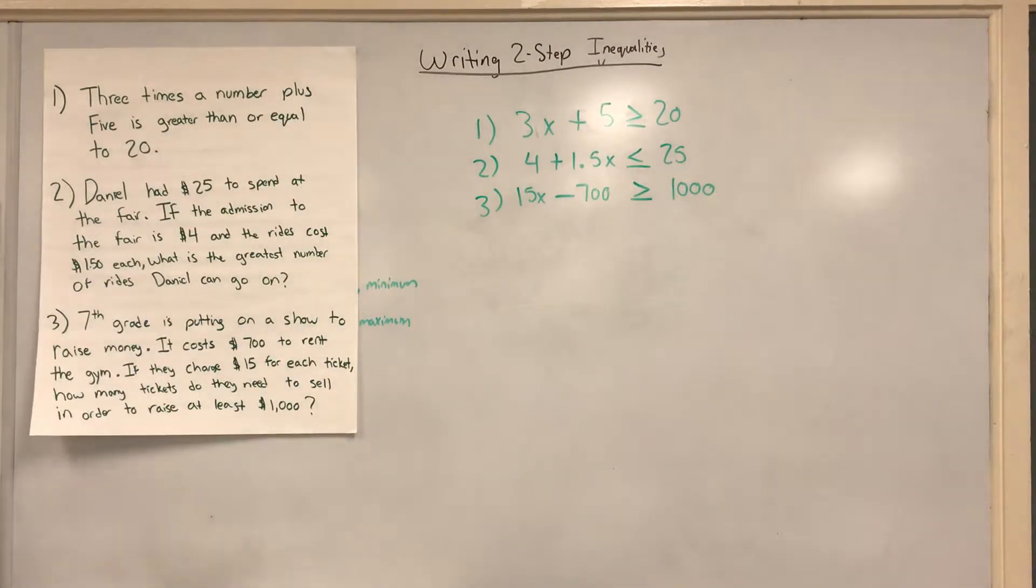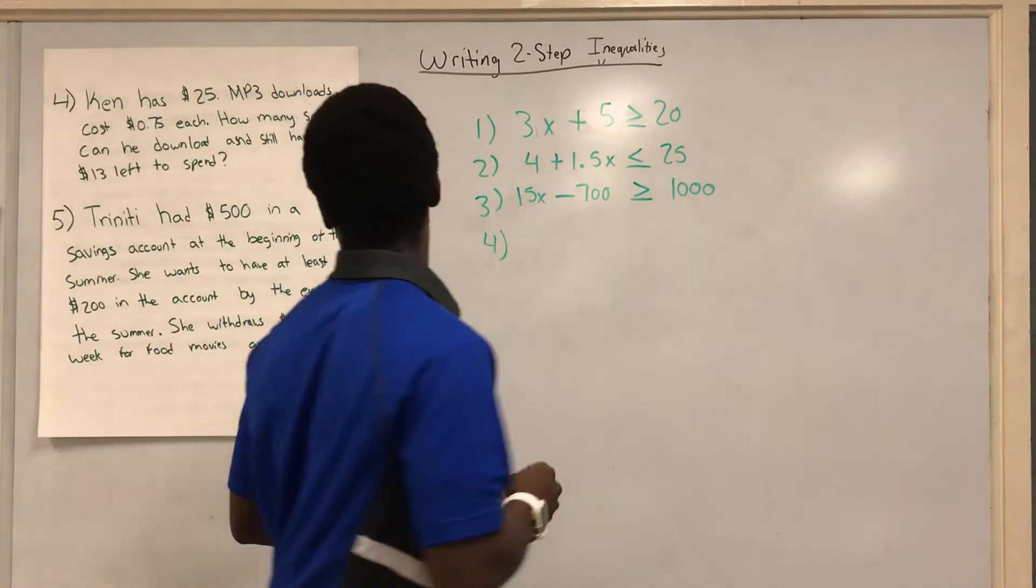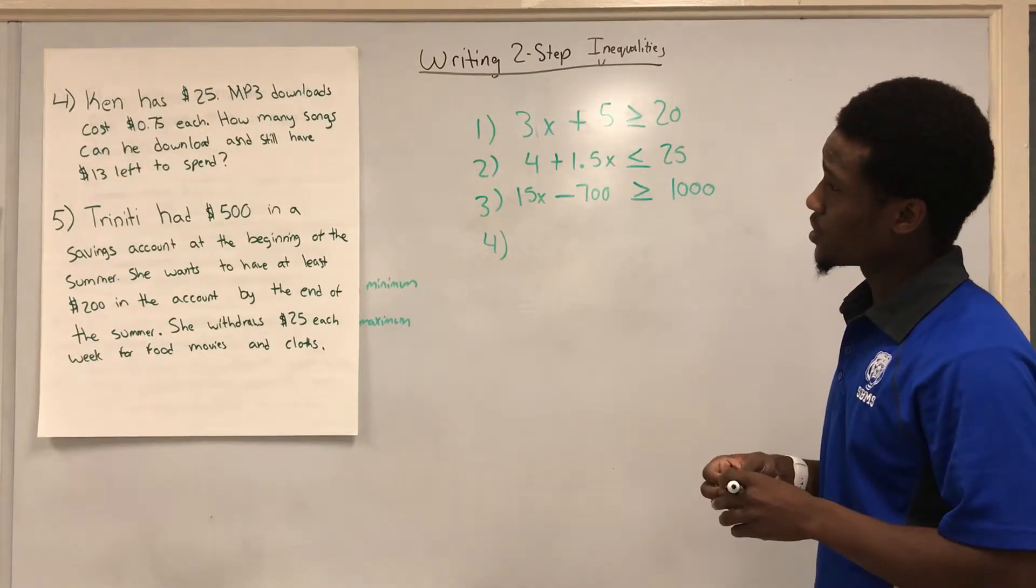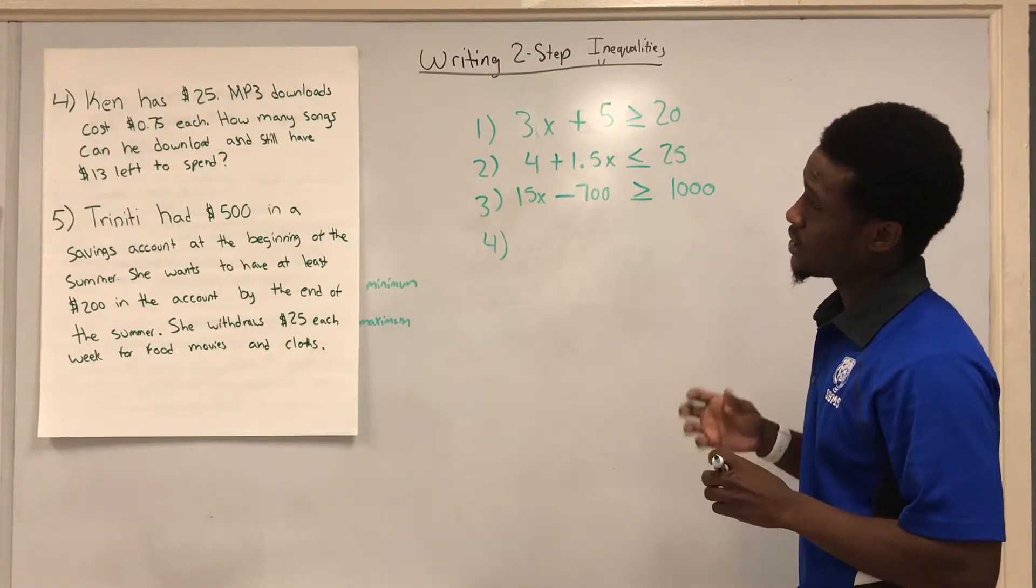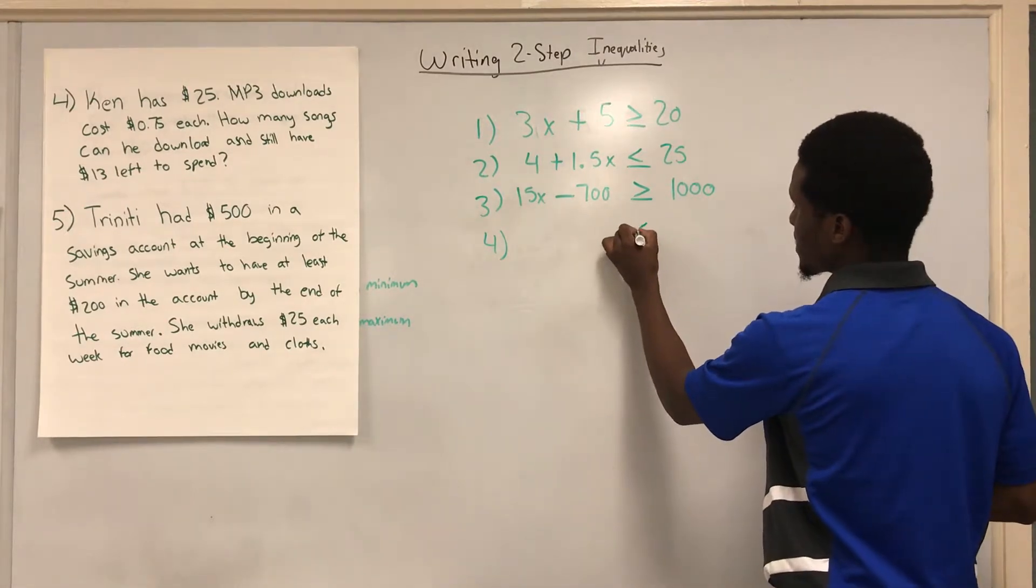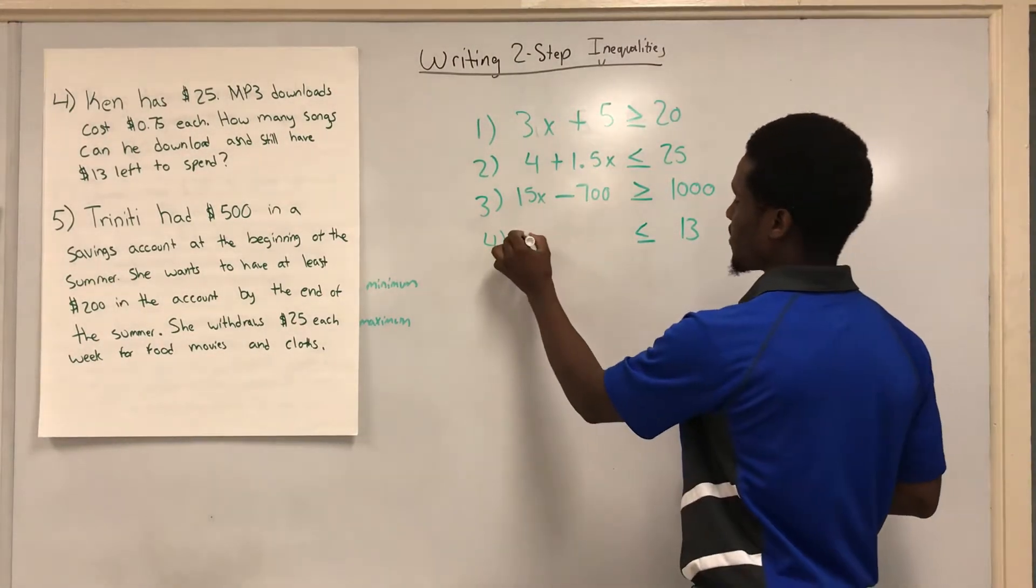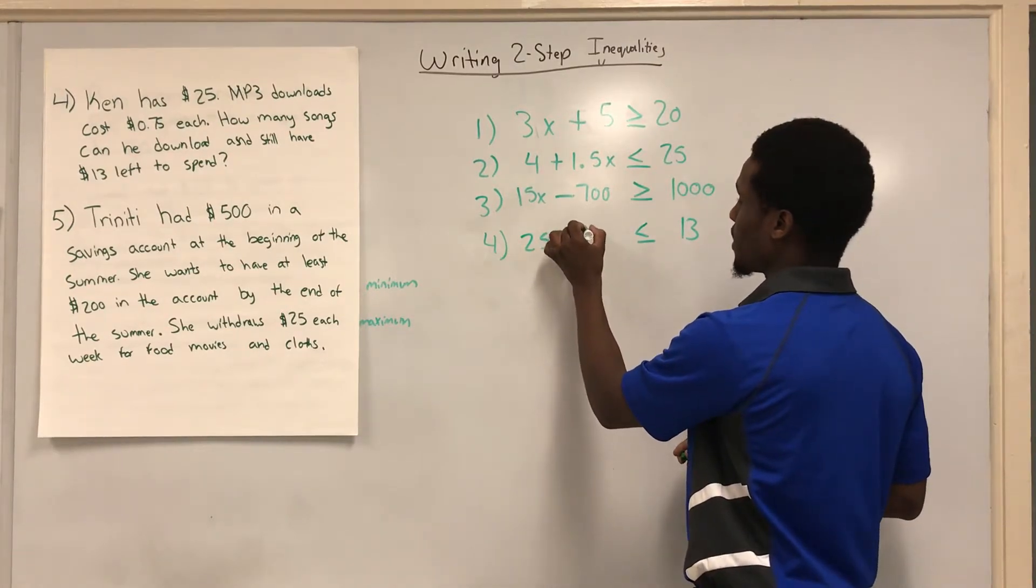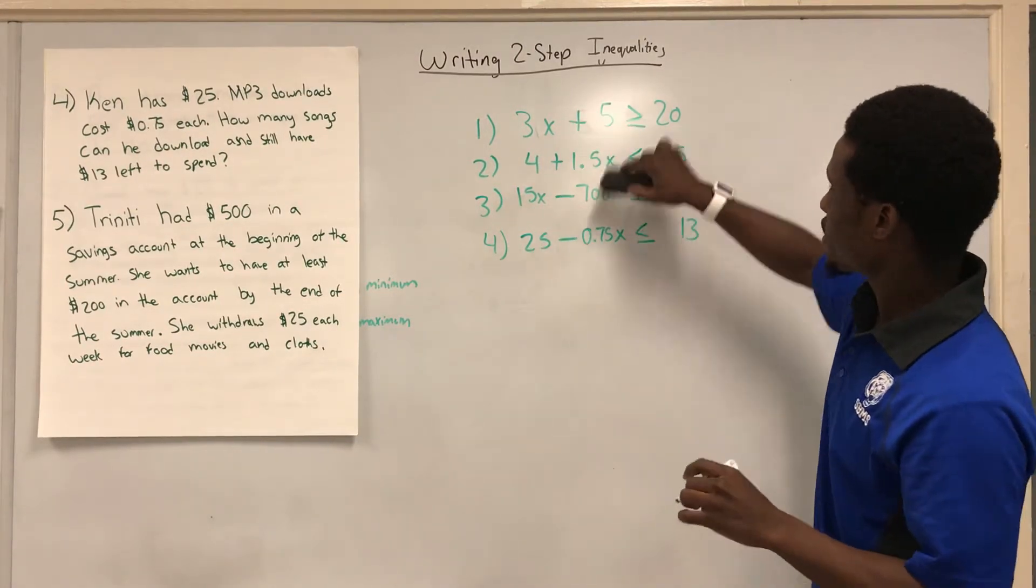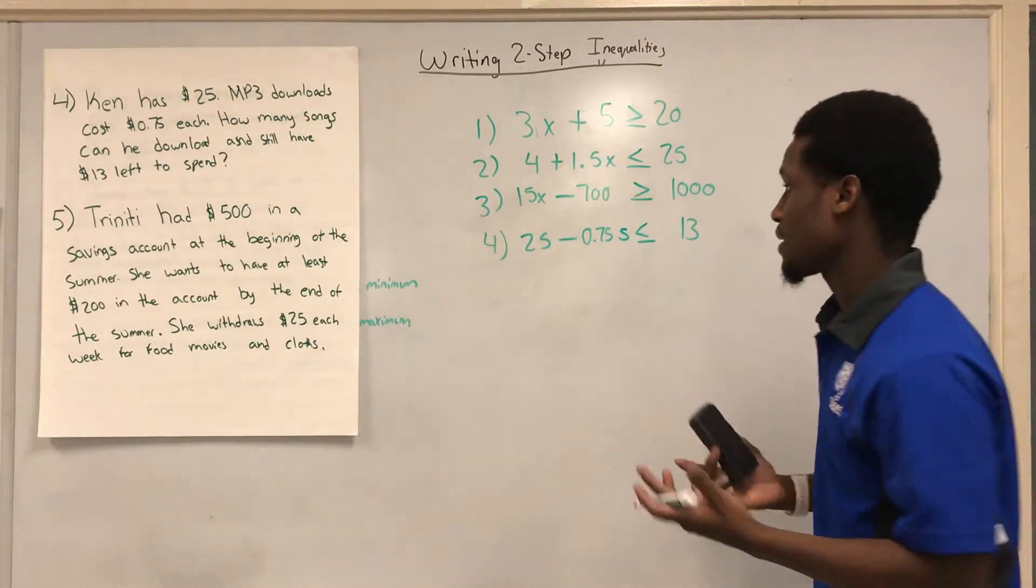Let's go ahead and grab the other examples. Ken has $25. MP3 downloads cost $0.75 each. How many songs can be downloaded and still have $13 to spend? So it says I still need to have $13 to spend, so this cost has to be less than or equal to $13. Ken has $25, so we have $25 is going to be our constant. And then we're taking away $0.75 for each song downloaded. And just so that you know that we don't always have to put x, for $0.75 per song, I'm going to put an S there. So my variable is going to be S instead of x. You can certainly do that.